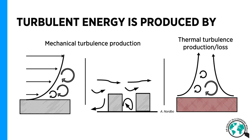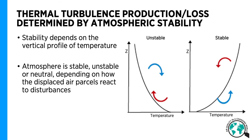A second way of producing turbulence or turbulent kinetic energy is thermal turbulence production. You can imagine a beautiful sunny day in summertime, when the sun is very efficiently heating the surface. What happens is that the air parcels close to the surface will start to rise to higher elevations. These parcels will be transported by turbulence and at the same time the heat tied to these air parcels is creating more turbulence in the atmosphere. Alternatively, if we have the opposite case, where we have greater air temperatures at higher altitudes than closer to the ground, turbulence would be suppressed because of the heat distribution. Thus, thermal turbulence production or loss is determined by atmospheric stability.